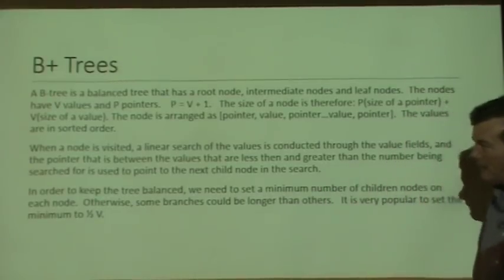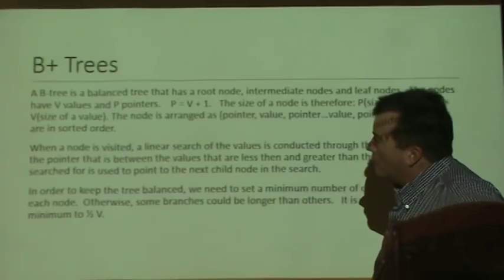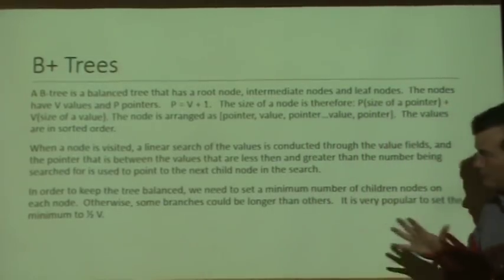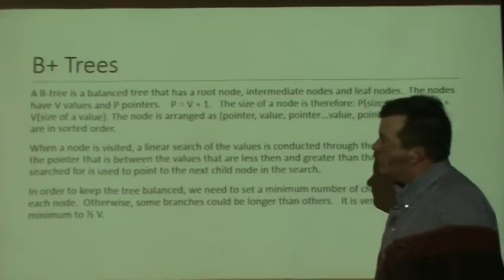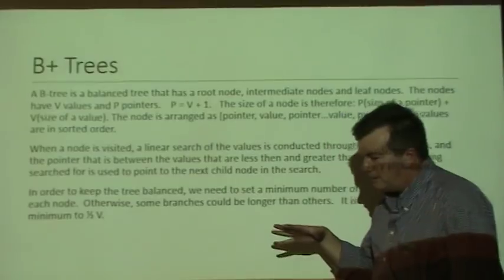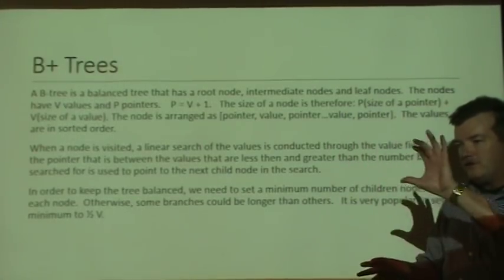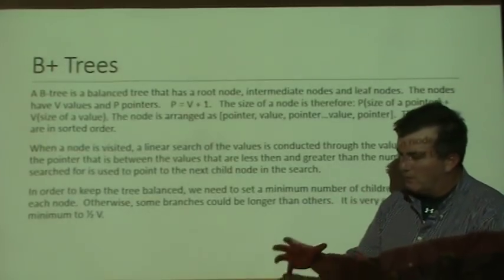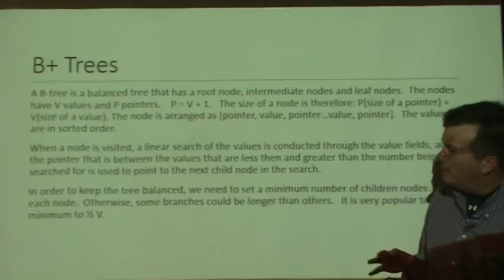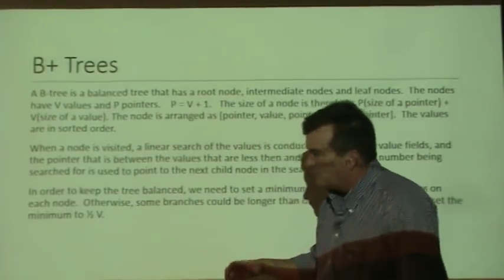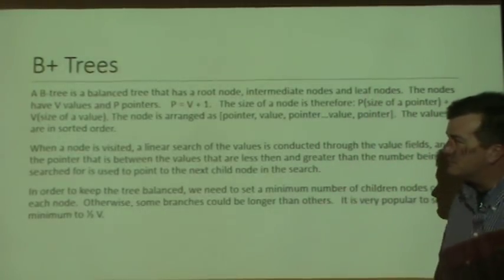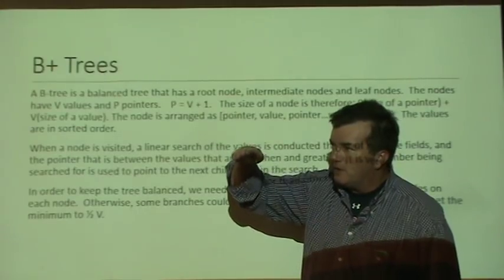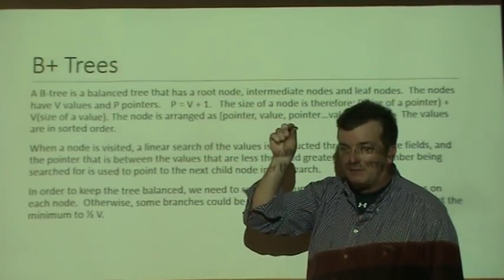We'll talk about B+ trees in more detail in another class, but I want to go over how they come into play in database systems. In a data structures class, you visit a node, it has data, and you can go left or right while searching. A B+ tree is balanced — 'B' stands for balance — so we don't have long branches and short branches; they all have the same depth. As we search through each level, we don't have all the data about a record, only the field we're searching on.